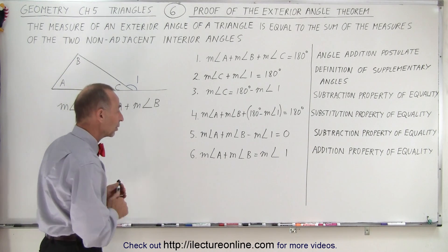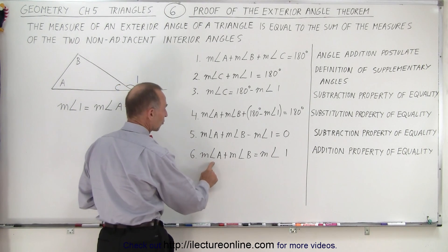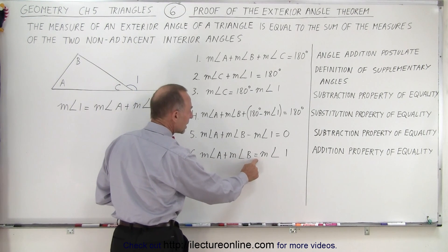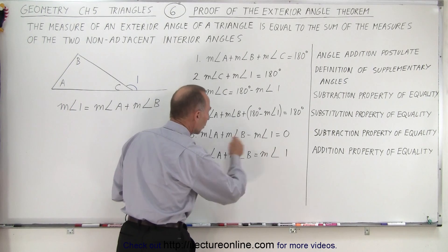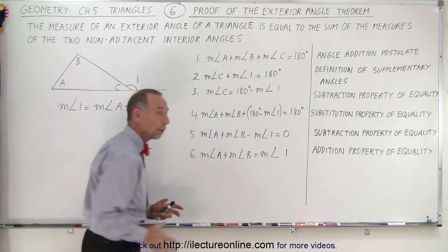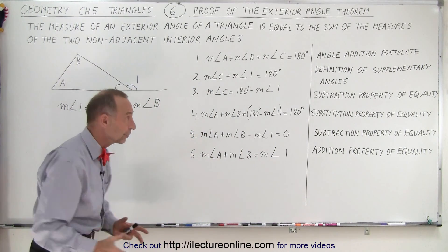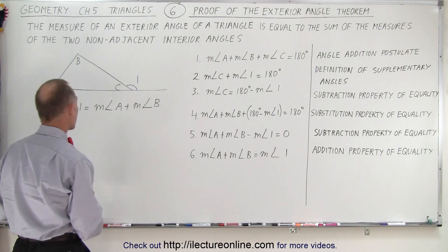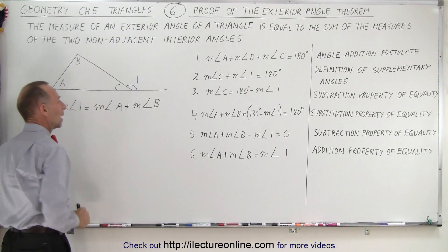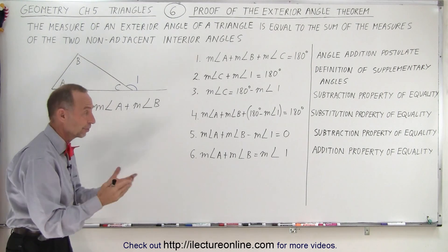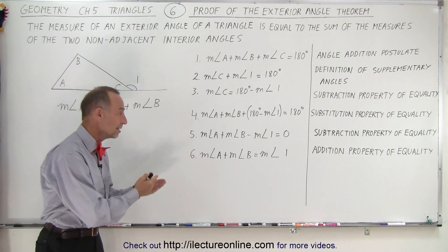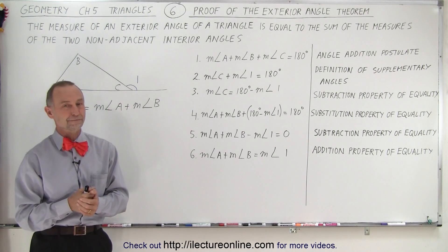Now we can see that the measure of angle A plus the measure of angle B is equal to the measure of angle 1, which is exactly what we were trying to prove. That is indeed the exterior angle theorem of a triangle — the equation we had at the beginning. So we've proven that this is indeed a correct theorem.